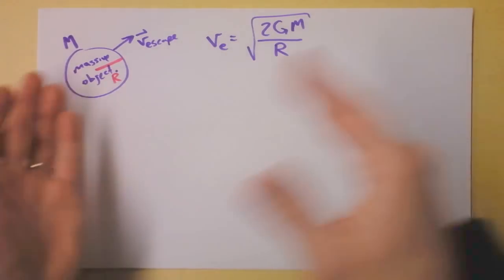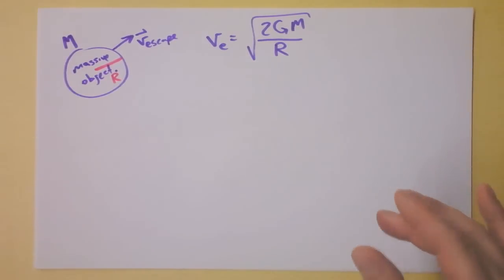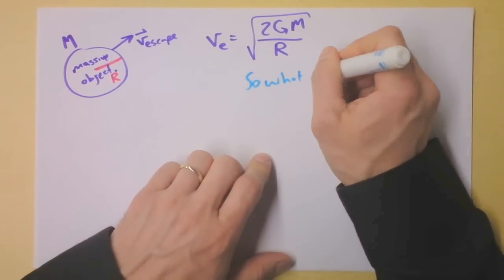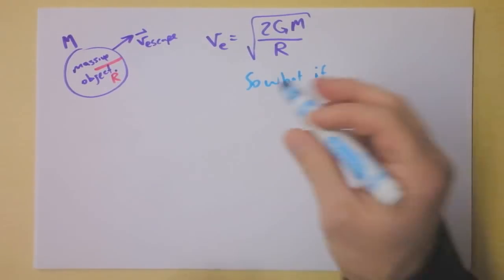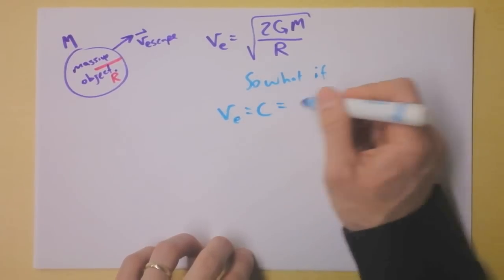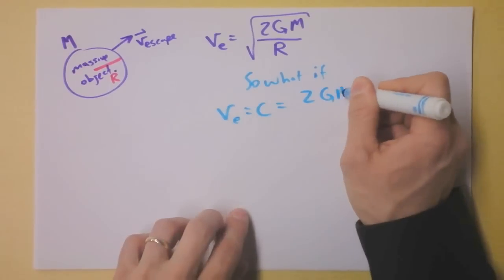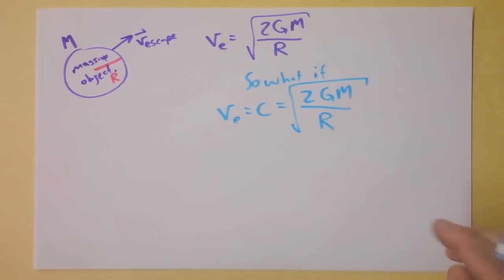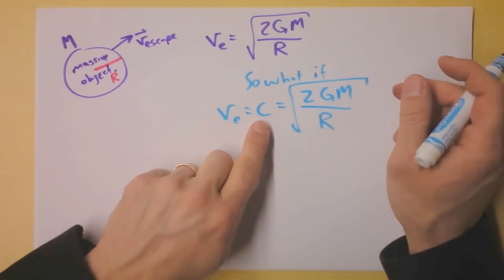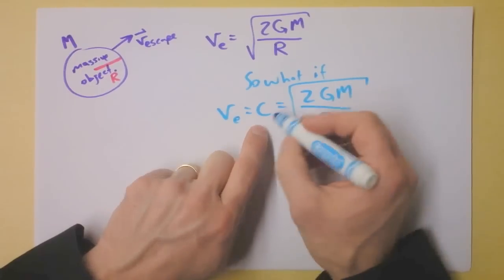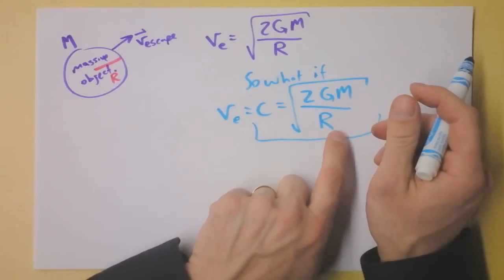The interesting thing is as we combine special relativity and general relativity we find that there is this ultimate speed limit in the universe. So what if you had an object where the escape velocity was the speed of light? That would be 2GM divided by the radius. What would this object be? Something that the very fastest things in the universe couldn't get out of.